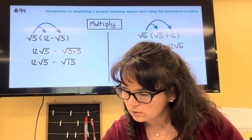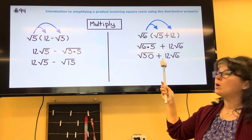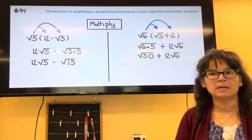I'm gonna bring down the 12 roots of 6. So if I have 1 root of 30 plus 12 roots of 6, they're not the same so we can't combine.